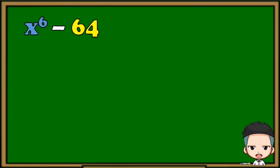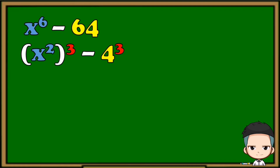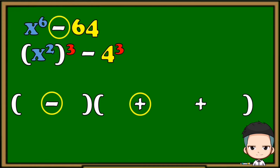Another example: x⁶ − 64. This is an example of difference of two cubes. First, put the two terms in their cube form and make sure to copy the operation. Next, prepare two sets of parentheses with operations. Since the given is difference of two cubes, the operation in the first parenthesis must be subtraction and the first operation in the second parenthesis should be addition.